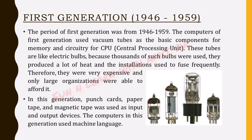Now let's study them one by one. The period of the first generation of computers was from 1946 to 1959. These computers used vacuum tubes as their basic components for memory and circuitry for the CPU. These tubes are like electric bulbs; because thousands of such bulbs were used, they produced a lot of heat and the installations used to fuse frequently.